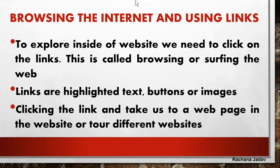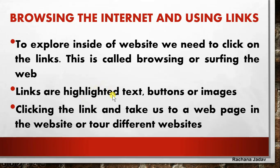Now, browsing the internet means using the links to explore inside a website. We need to click on the links - when we click on links, that is called browsing or surfing. Links are highlighted text, buttons, or images. When you search in a search engine like Google about your topic - like you write the chapter name and Class 5 - you will get text, videos, and images over there.